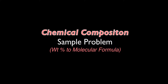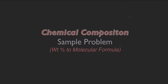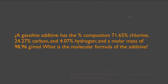Let us now consider a chemical composition problem. A gasoline additive has the percent composition of 71.65% chlorine, 24.27% carbon, and 4.07% hydrogen. It has a molar mass of 98.67 grams per mole. What is the molecular formula?